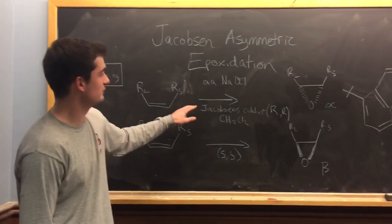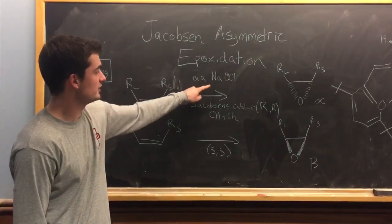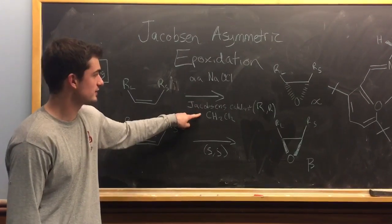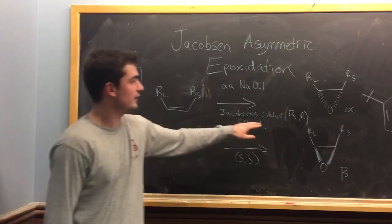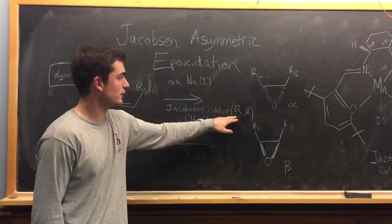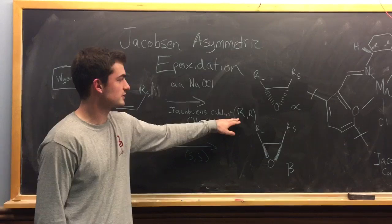And we've got a bleaching agent here in Jacobson's catalyst, which I'll show you in a sec. But basically here all you need to know is if you have R-large here, R-small here, and the R-R version of the Jacobson catalyst,